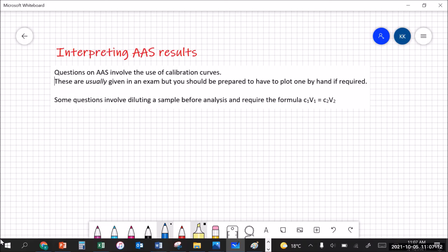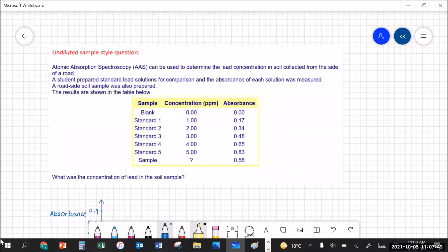Let's learn how you interpret atomic absorption spectroscopy results now. Questions on AAS normally involve the use of calibration curves and in an exam they're normally given but you should actually be prepared to have to plot one by hand if required. It's just a basic graph. Some questions involve diluting a sample before analysis and so you have to remember your dilution formula, C1V1 equals C2V2. There are two types of questions. There's the basic type where there's no tricky dilution to deal with and then there's the harder type which actually have dilution. So let's have a look at this first example.